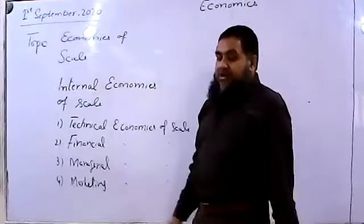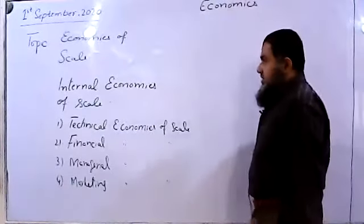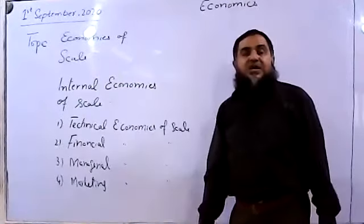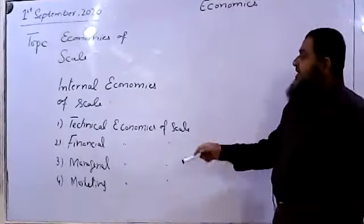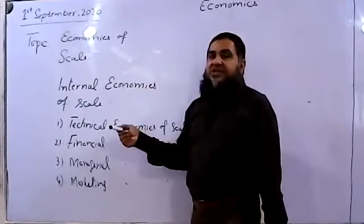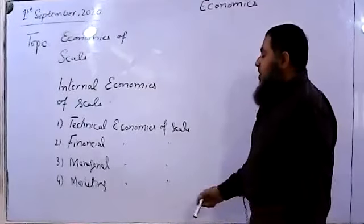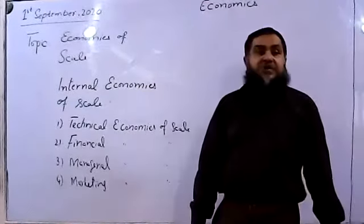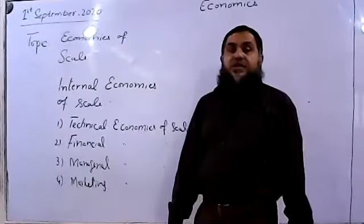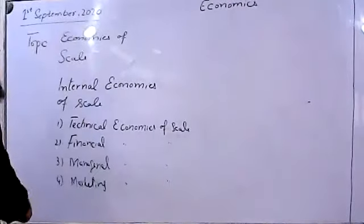Economies of scale is when long run average cost of production is going to fall — that is called the firm enjoying economies of scale. There can be two types: internal economies of scale and external economies of scale. Internal means when the firm is taking its decision to become larger — it increases capital, managerial skills, finance, technology, and marketing.